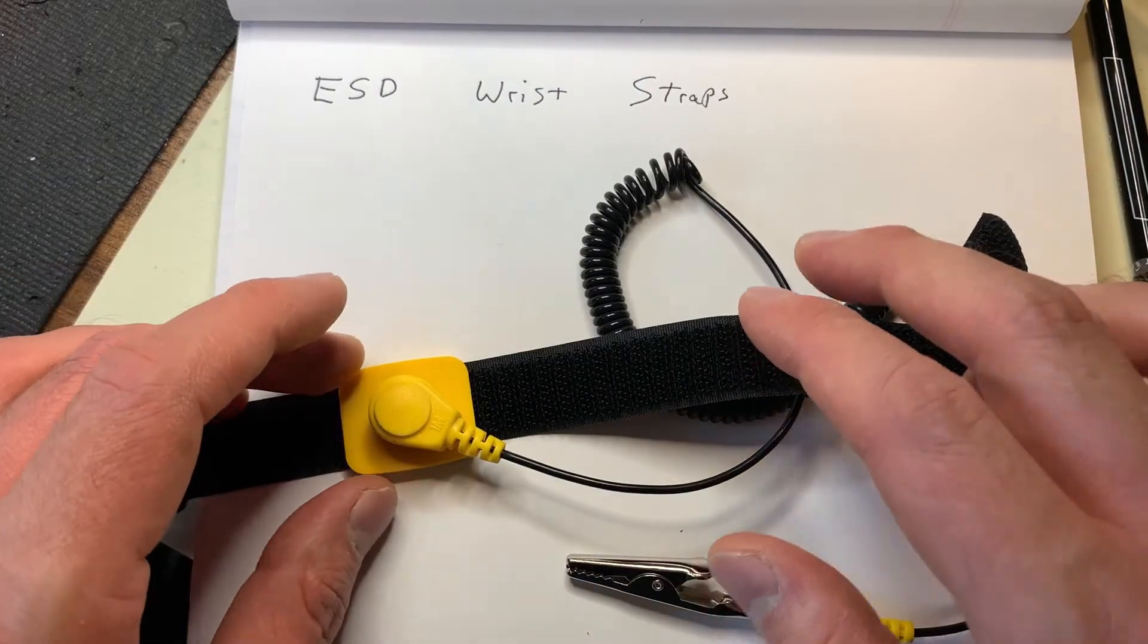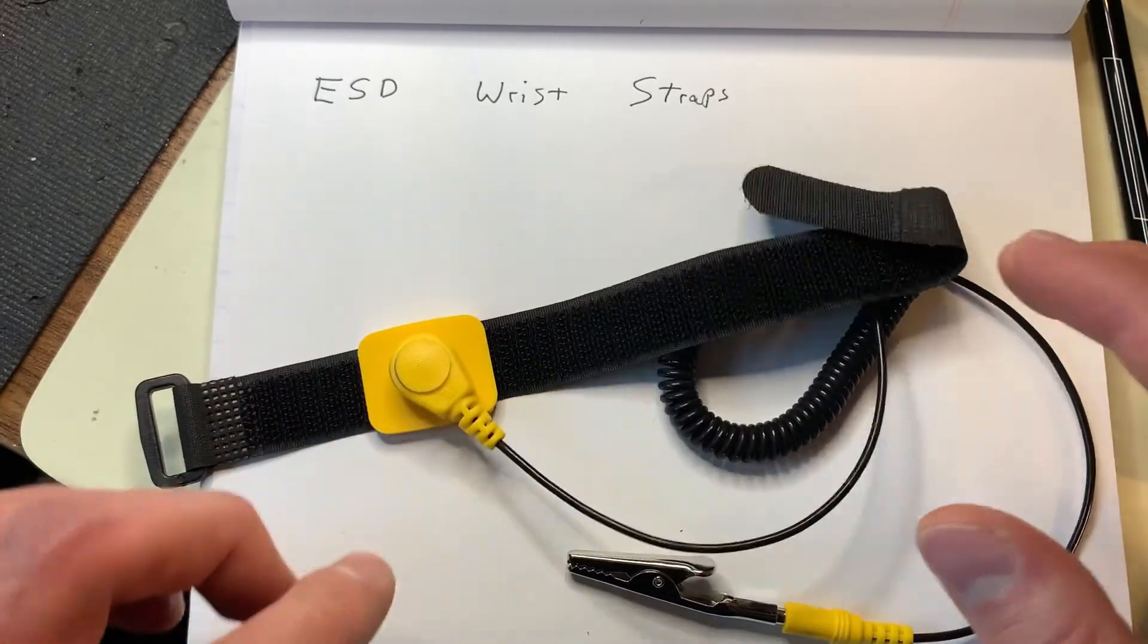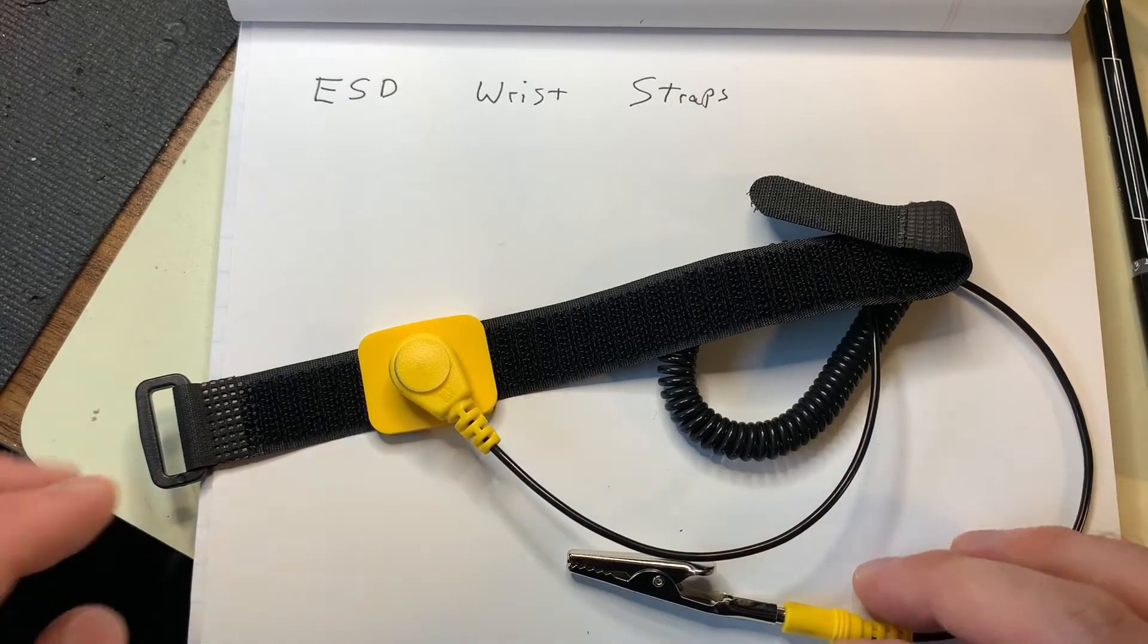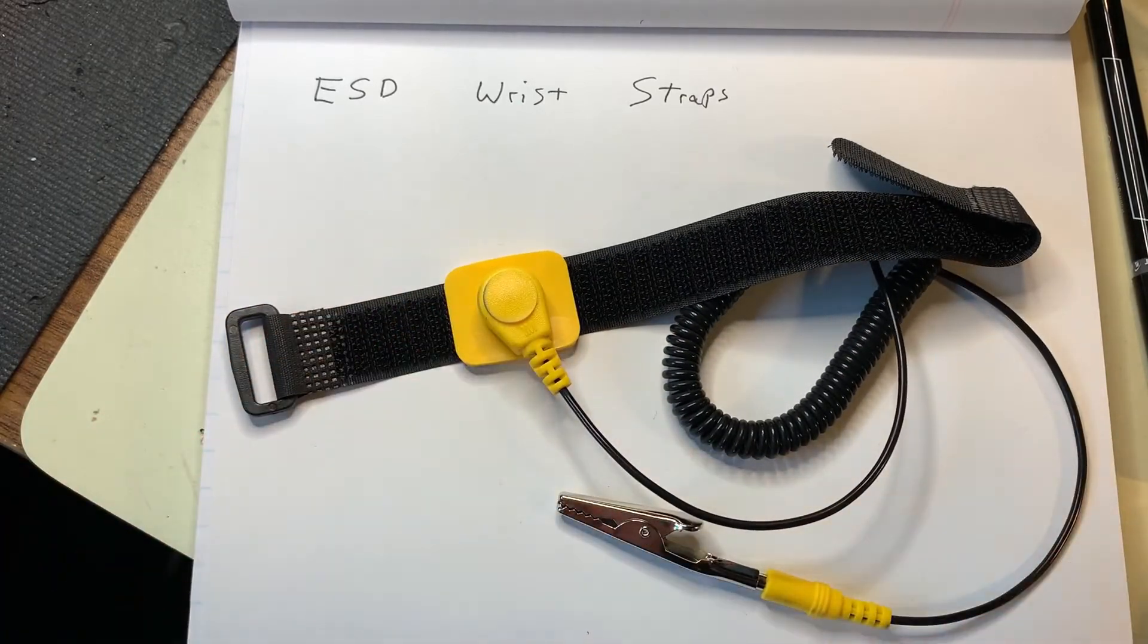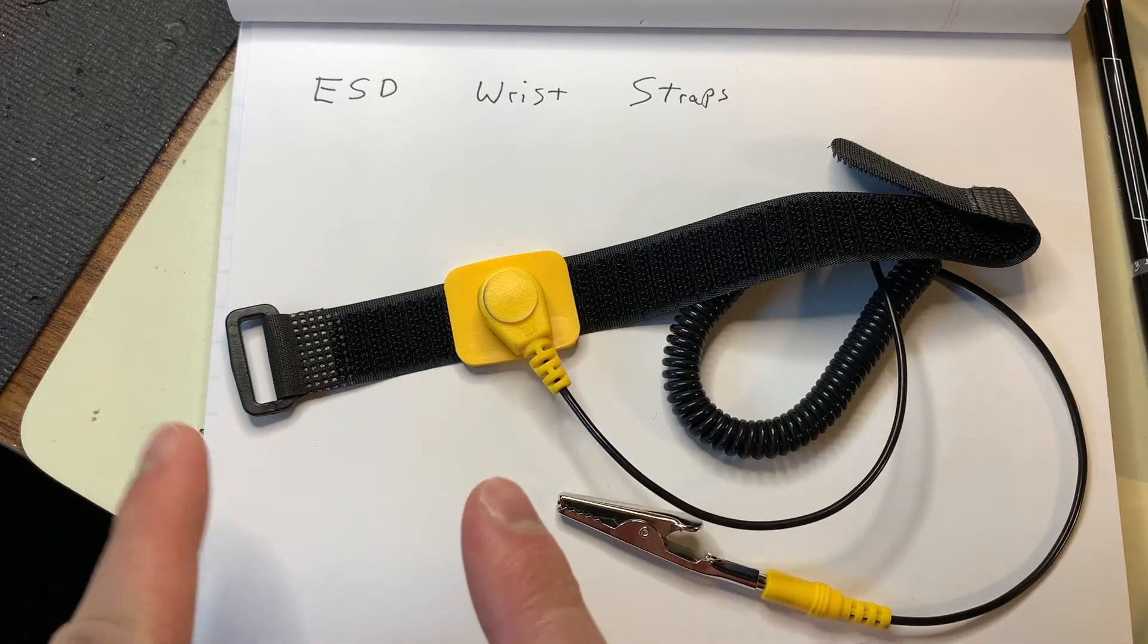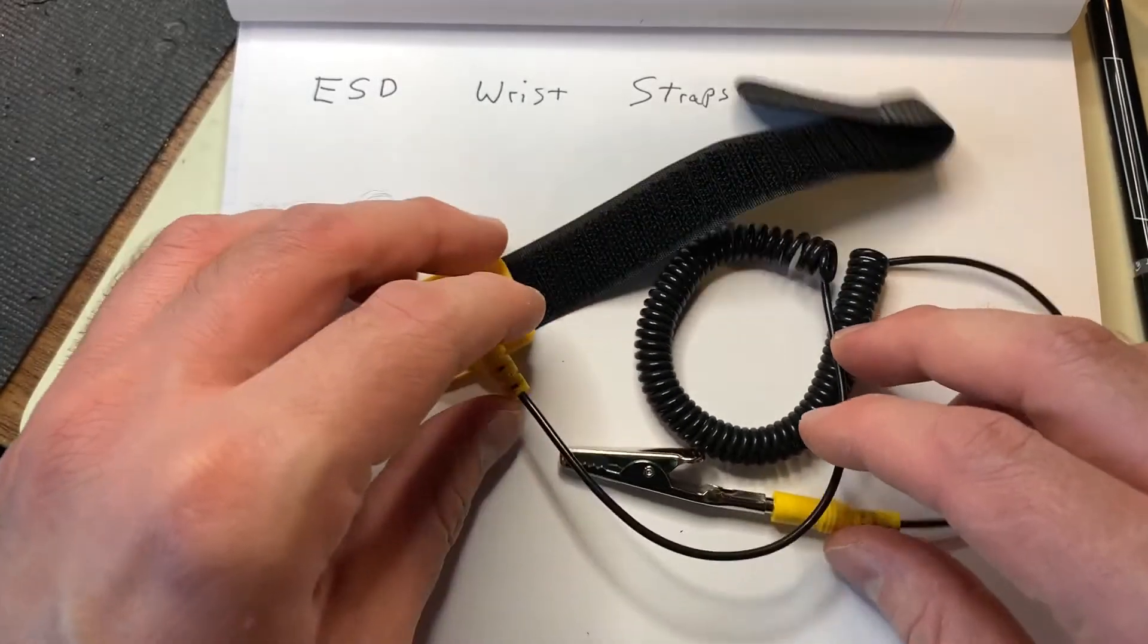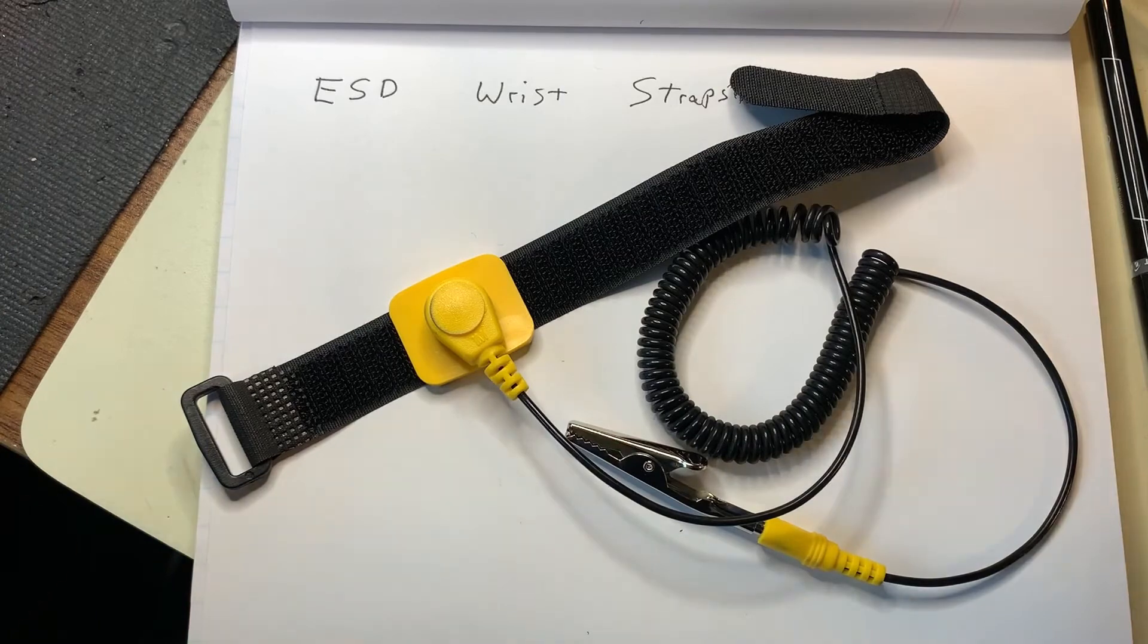So ESD wrist straps can sometimes be overlooked or forgotten, but they are extremely important when it comes to handling electronic devices for a multitude of reasons. Not just because it may damage the part, but it may damage the part in a way that's hard to detect. It could also cause things like explosions if you are working in an environment that has fumes that are flammable.